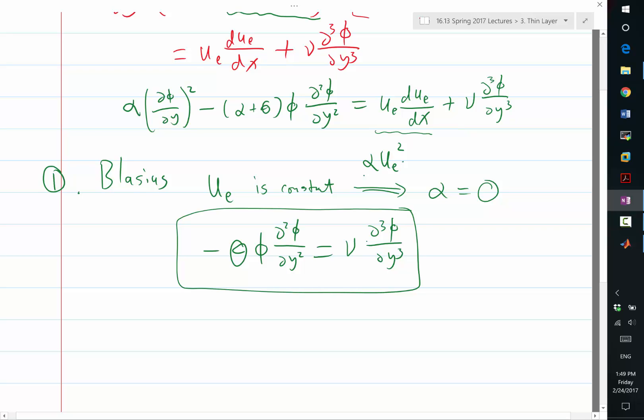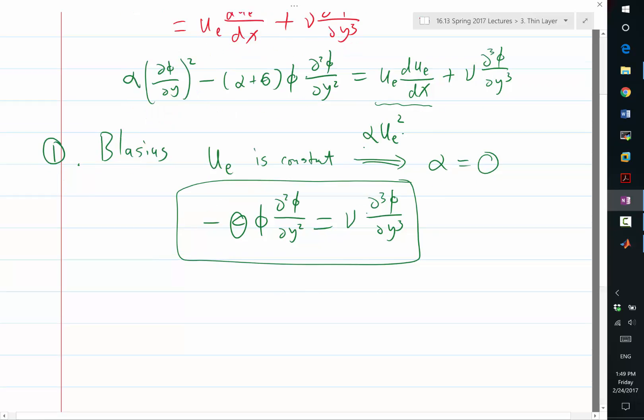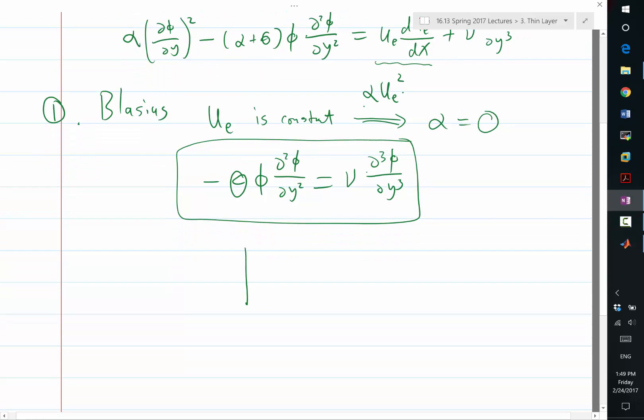So alpha is kind of the rate of change in the x direction when you scale y properly, right? So alpha, the physical meaning of alpha is you have a velocity profile like that, and after a little bit, it becomes like that. So if you have a line that connects the same locations,